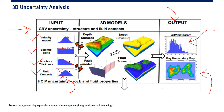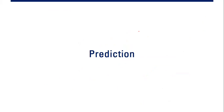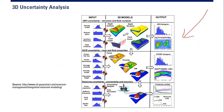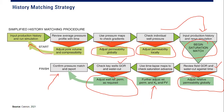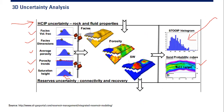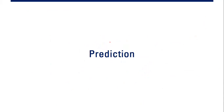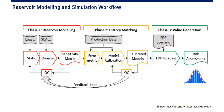Lastly, prediction. After you get a history-matched model — after you get good matching — you do prediction, you do forecasting. You construct history matching, get the good matched and calibrated model, and then use the calibrated model to construct your field depletion plan forecast, production forecasting, and also create risk assessment.